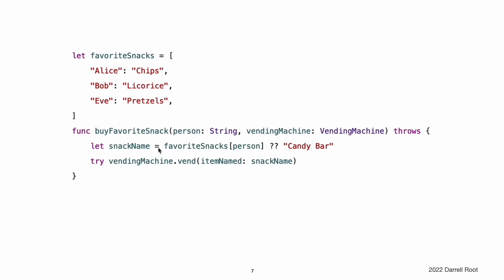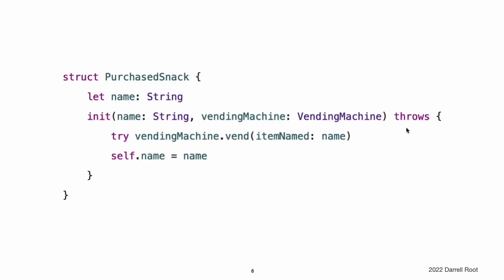In this example, the buyFavoriteSnack function looks up a given person's favorite snack and tries to buy it for them by calling the vend(itemNamed:) method. Because the vend(itemNamed:) method can throw an error, it is called with the try keyword in front of it. Throwing initializers can propagate errors in the same way as throwing functions. For example, the initializer for the PurchasedSnack structure calls a throwing function as part of the initialization process, and it handles any errors that it encounters by propagating them to its caller.